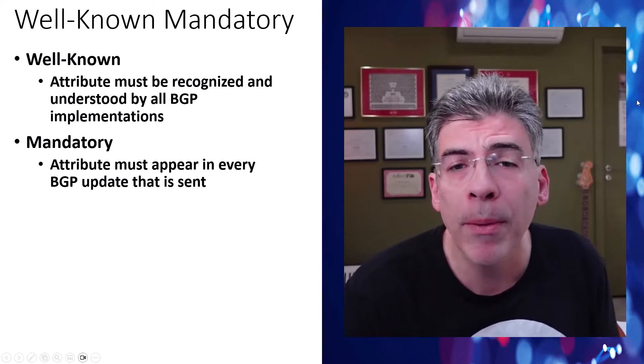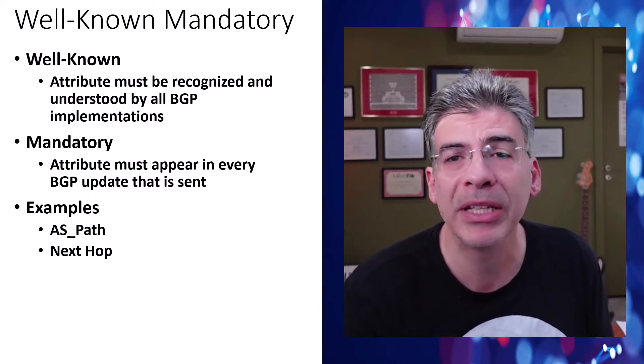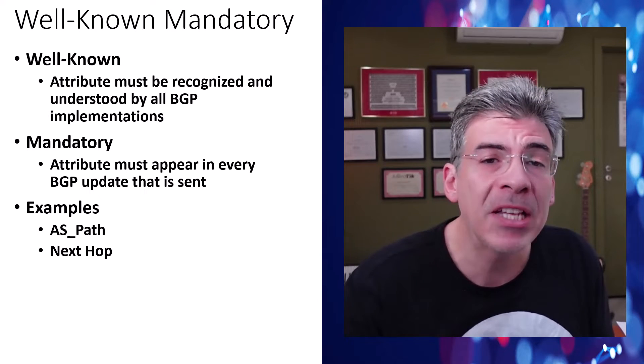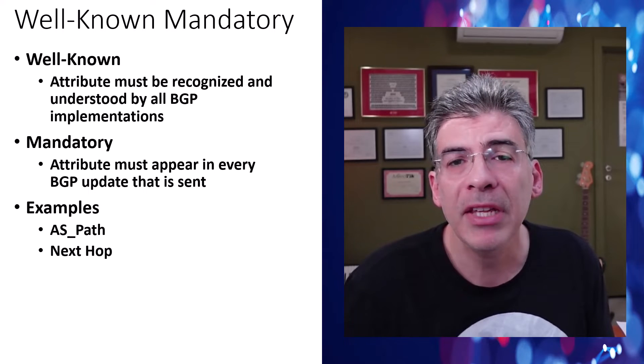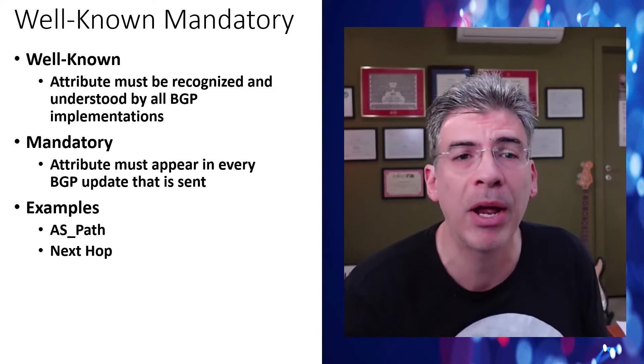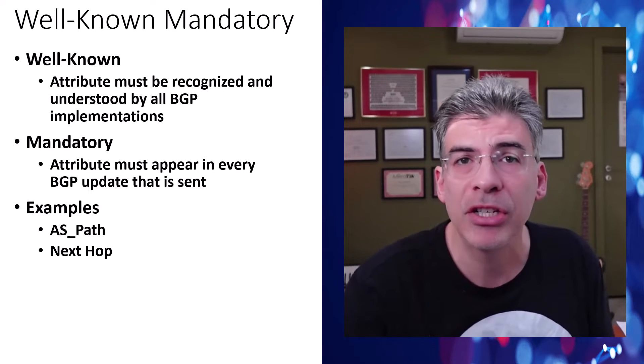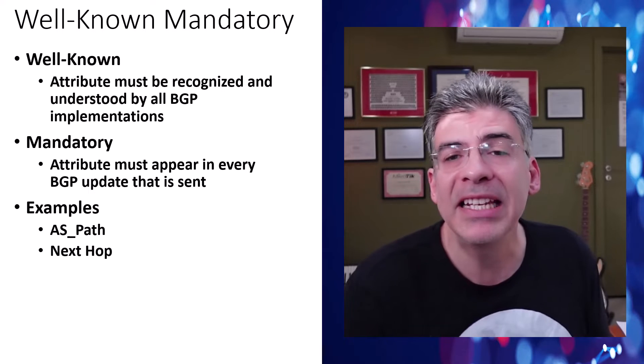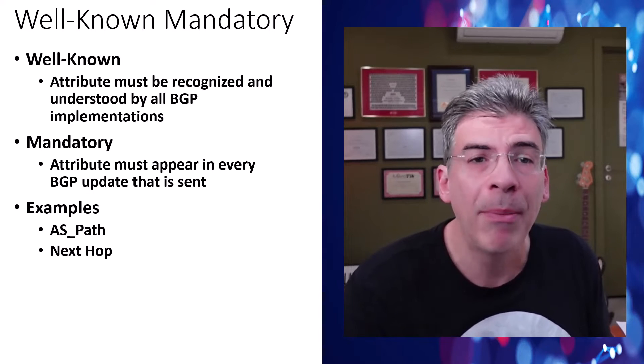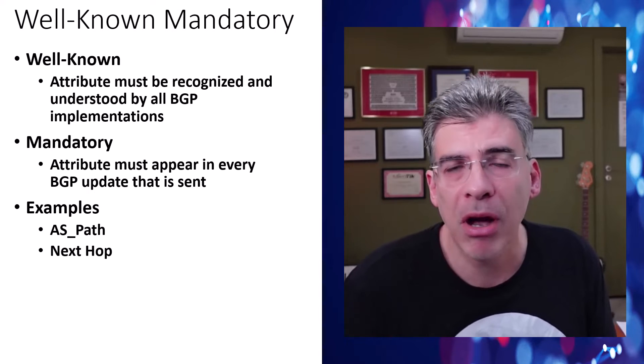Examples of well-known mandatory attributes include the AS path, which is simply a list of ASs that must be traversed to reach a particular destination. If a BGP message tells us about a particular network and there's no AS path in the BGP update, the message is dropped. Another example is the next hop IP. This indicates the IP address of the next hop. If that's not found within the BGP update, the message is dropped.